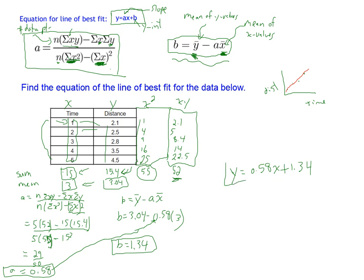We can use this equation to make predictions. For example, if time is in seconds and distance in meters, we can find the distance at time 2.5 by substituting x = 2.5. Or, to find how long it takes to travel 5 meters, we substitute y = 5 and solve for x. That's how we find the line of best fit — it's a long and tedious process but not difficult. Once you have the table, you just plug values into the equation. You could also do this whole table using technology, but it's helpful to understand how the process works.